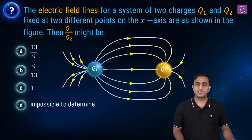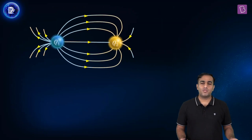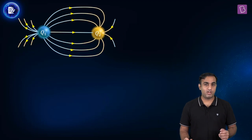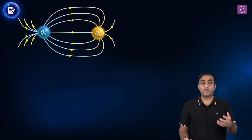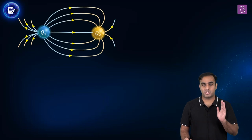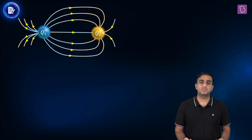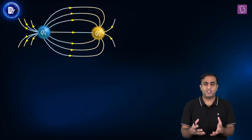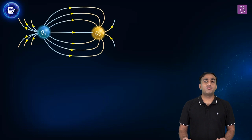Before answering this question, let's look at what the electric field line concept is all about. An electric field line is an imaginary line or curve that we draw around a charge producing that field. A tangent drawn to this field line gives us the direction of the electric field vector at that position. Also, in this model, the more dense the electric field lines in a certain region, the more intense the electric field there.